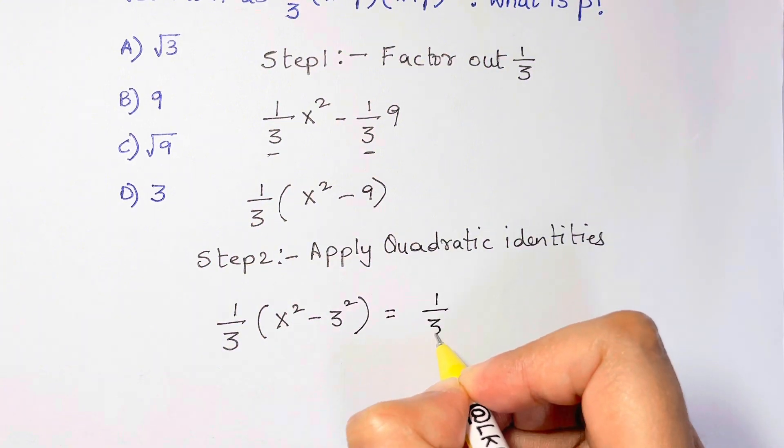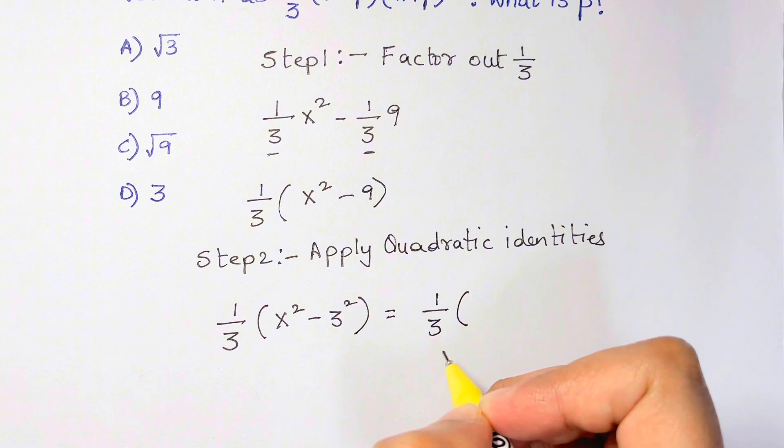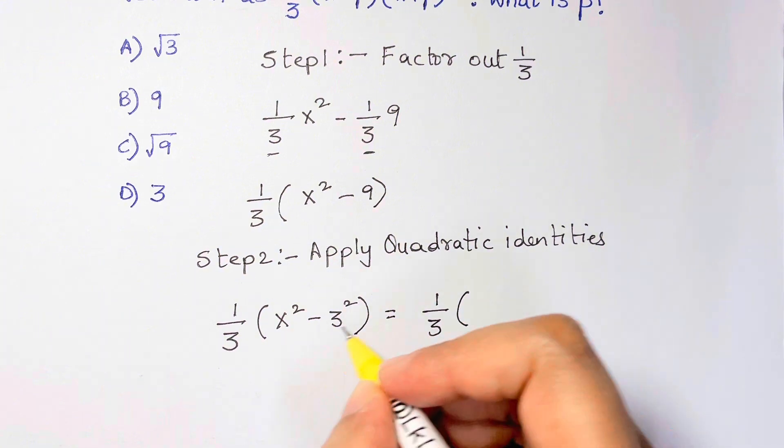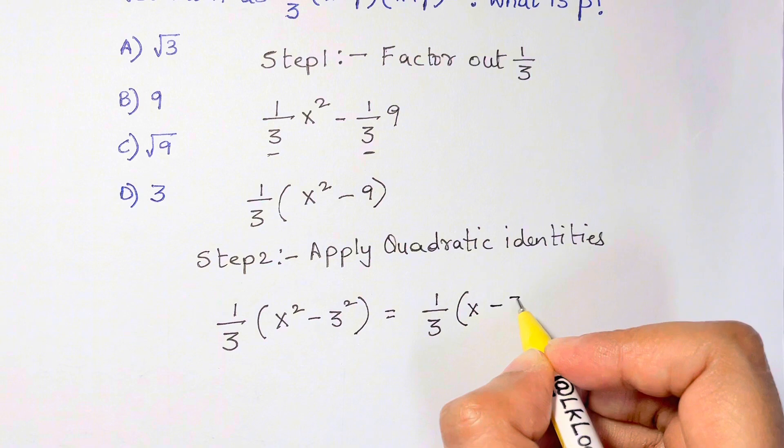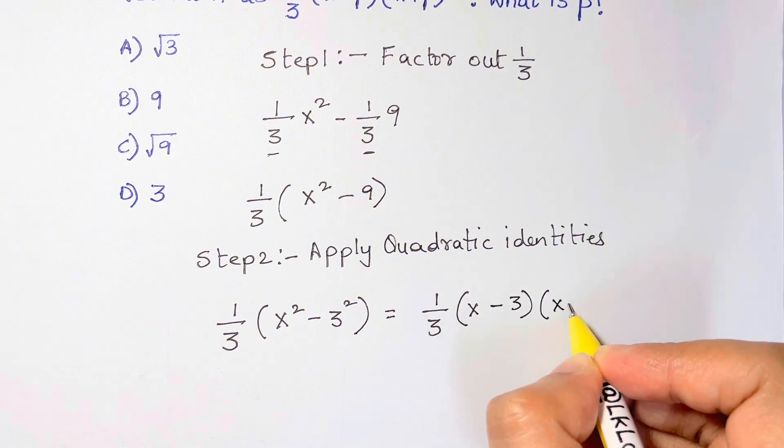This can be rewritten as 1/3, and applying your quadratic identity, that's (x - 3)(x + 3).